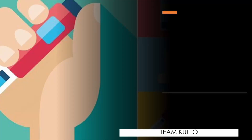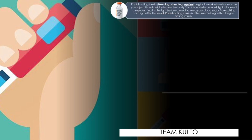Let's discuss the types of insulin. We have several types. The first is rapid-acting insulin — these are Novolog, Humalog, and Apidra. This begins to work almost as soon as you inject it and quickly leaves the body two to four hours later. You will typically inject rapid-acting insulin right before a meal to keep your blood sugar from spiking too high after the meal. Rapid-acting insulin is often used along with longer-acting insulin.